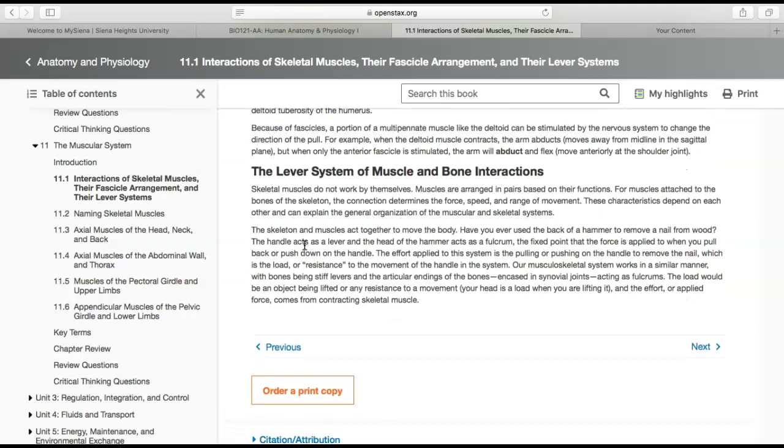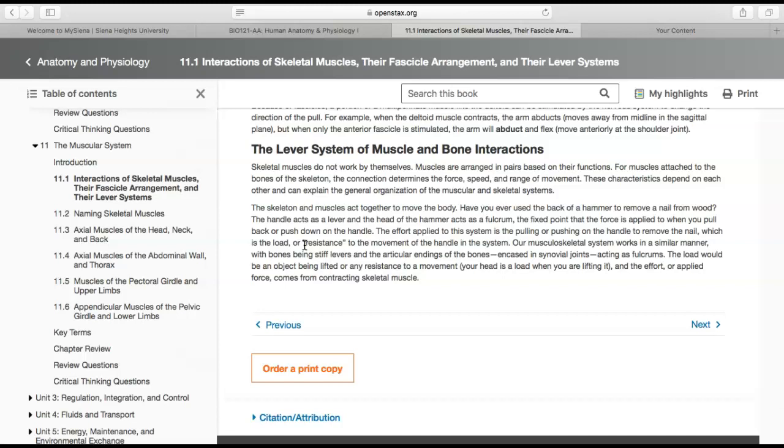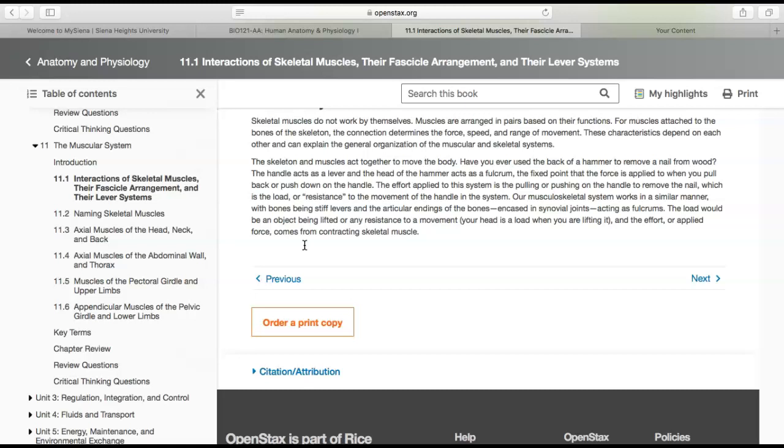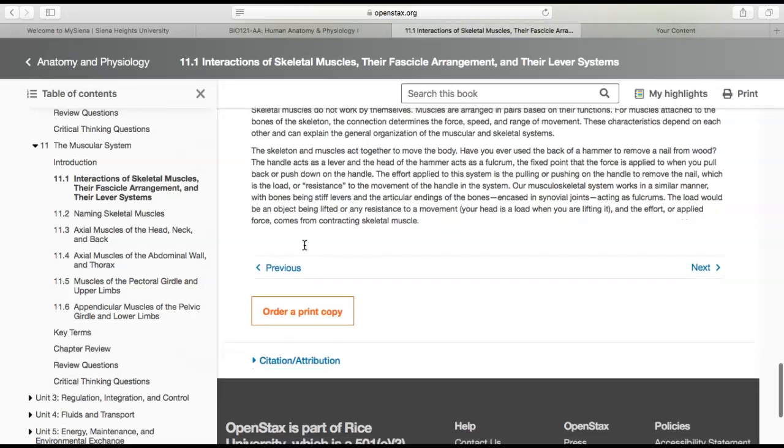As we know, skeletal muscles don't work by themselves—they're arranged in pairs based on their function. For muscles attached to bones of the skeleton, their type of connection determines the force, speed, and range of movement. The skeleton and muscles have to act together to move the body. Have you ever used the back of a hammer to remove a nail stuck in wood? The handle acts as a lever and the head acts as the fulcrum.